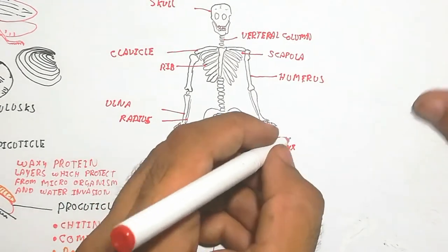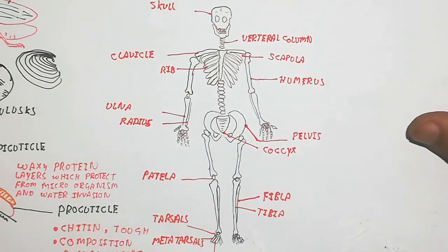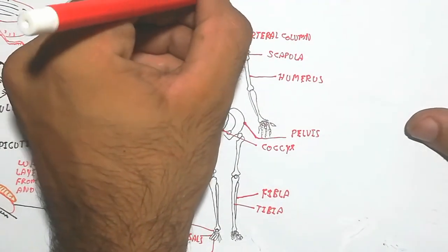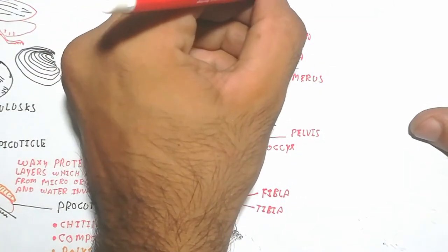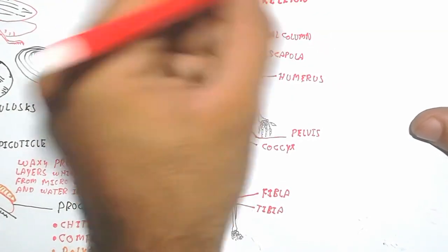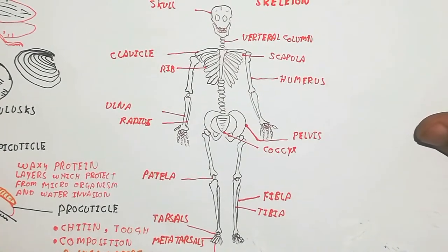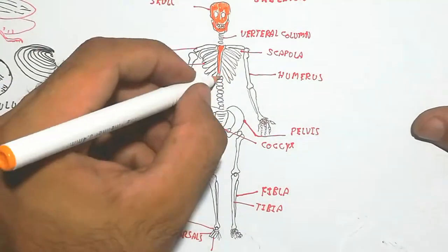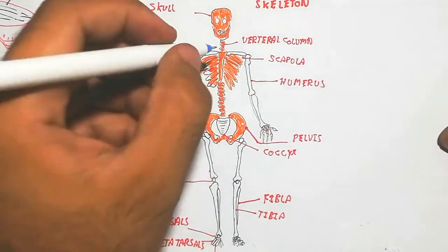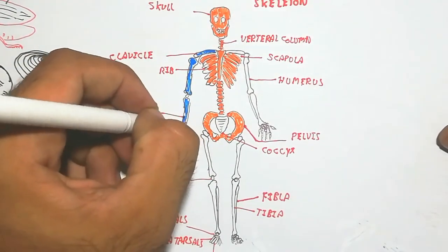The forelimb is the hand and the hindlimb is composed with the feet, fibula, tibia, and femur. The femur is the longest bone in the human body. In the diagram, the orange color shows the axial skeleton and the blue color shows the appendicular skeleton.